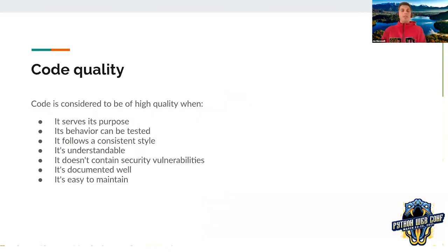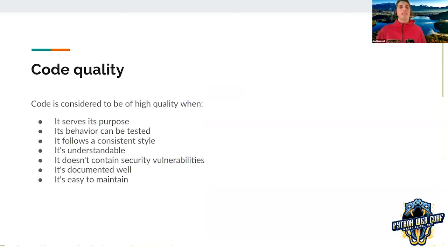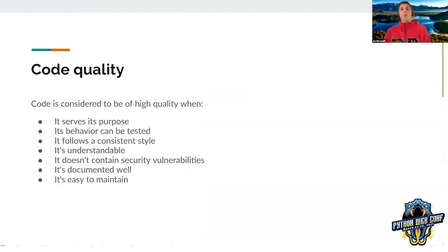Once your environment is set up and your code is tested, we can start talking about code quality. Code is considered high quality when it serves its purpose, its behavior can be tested, it follows consistent style, it's understandable so other developers can read and maintain it, it doesn't contain security vulnerabilities, it's well documented, and it's easy to maintain.